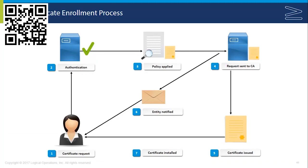The RA will then authenticate that entity, which is used to determine the policy requirements. In many cases it's just username and password, but in other cases there may be additional requirements. The policy is applied to the request that pertains to the particular CA that's going to issue the certificate. And that request is sent to the certificate authority — assuming you meet all the requirements, the request is sent to the CA.